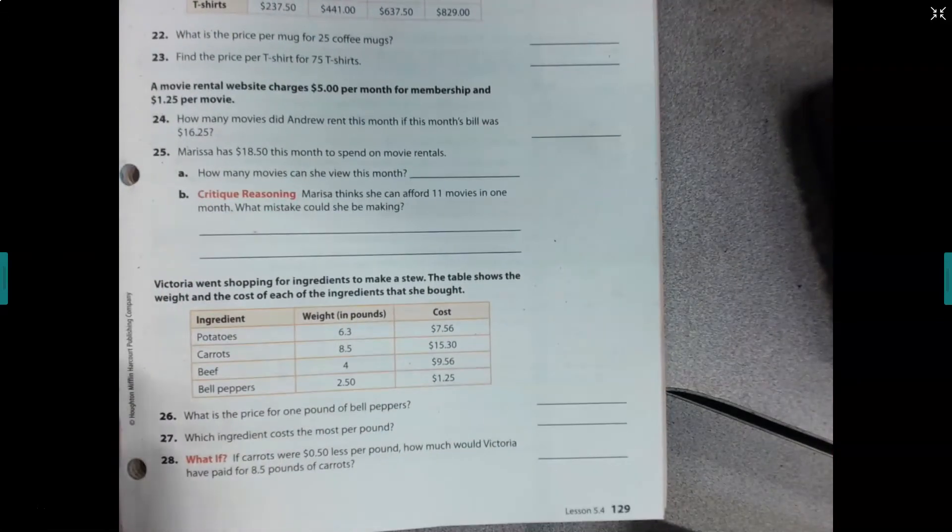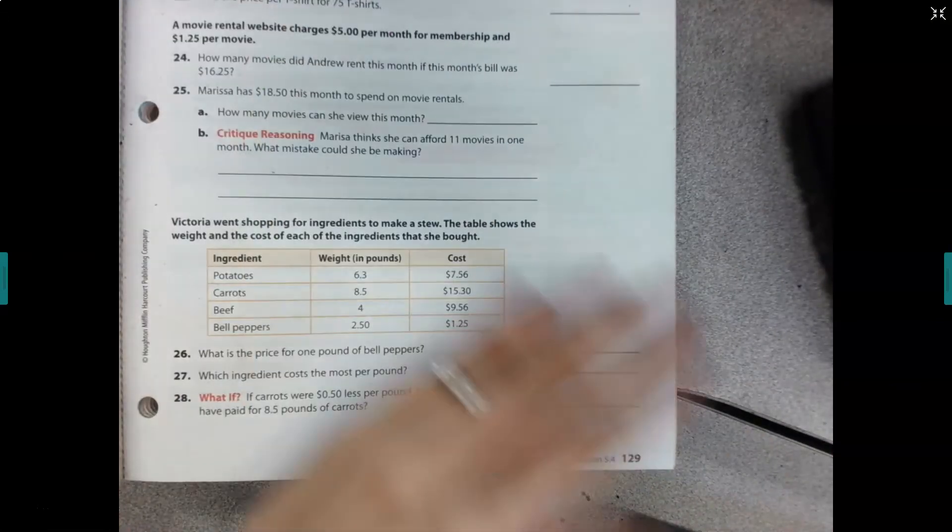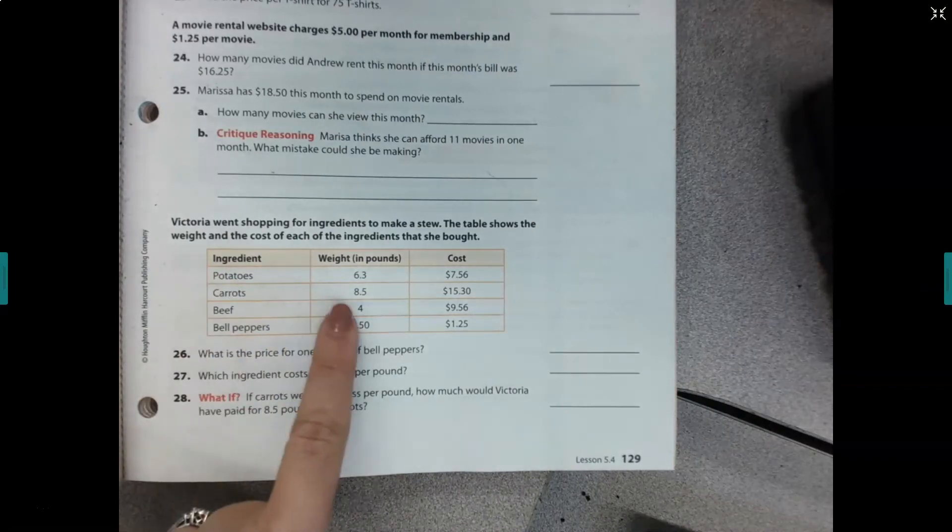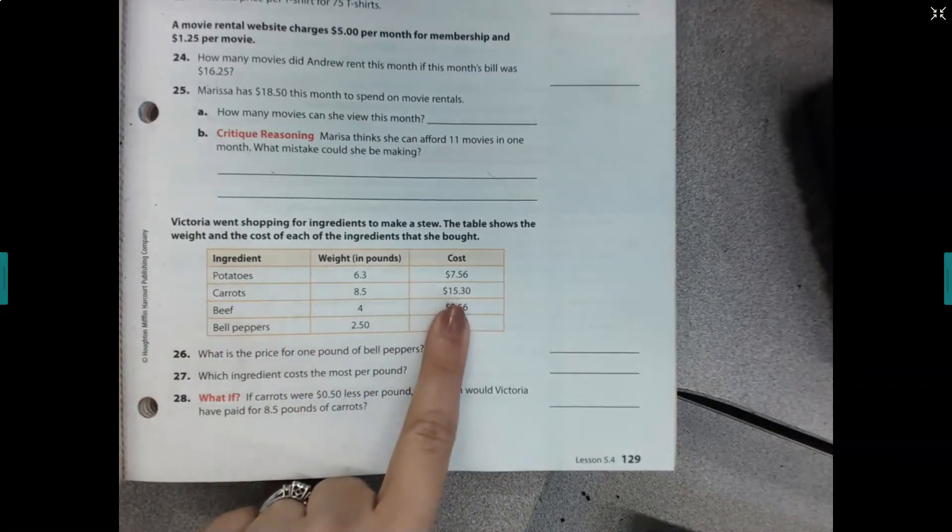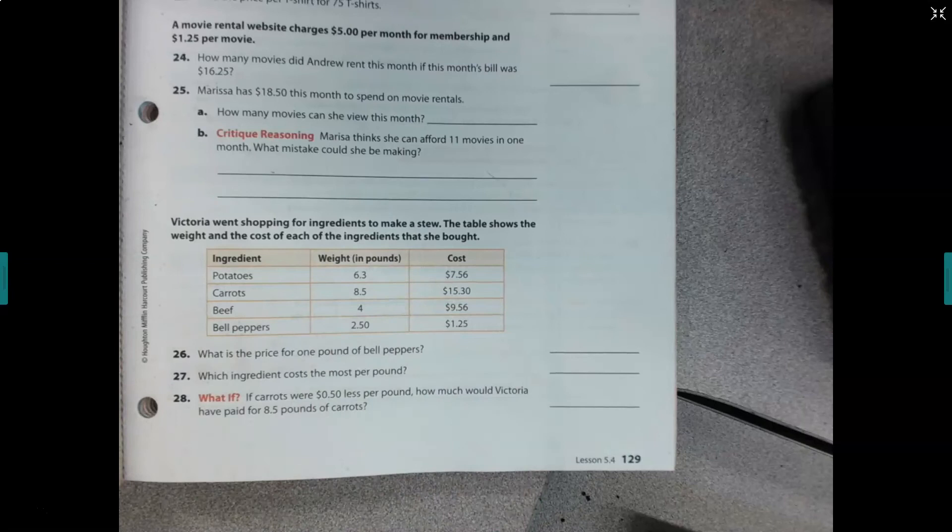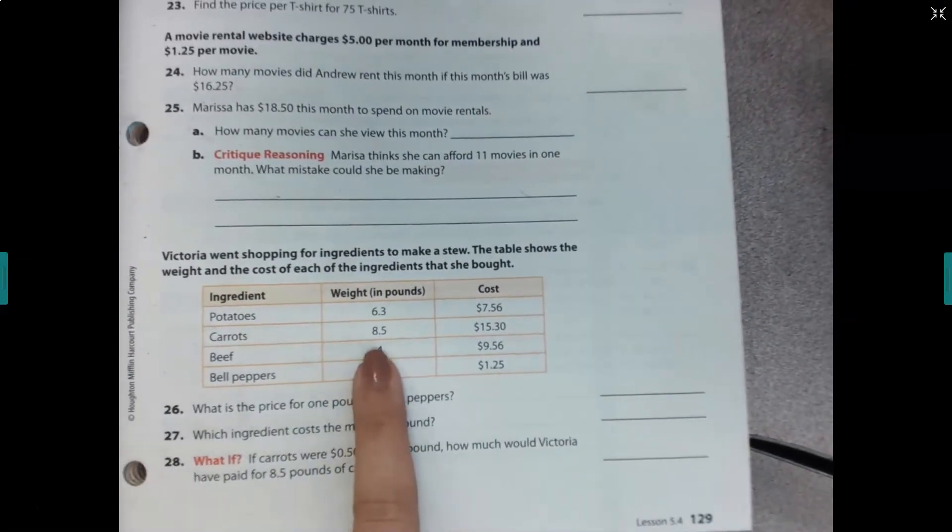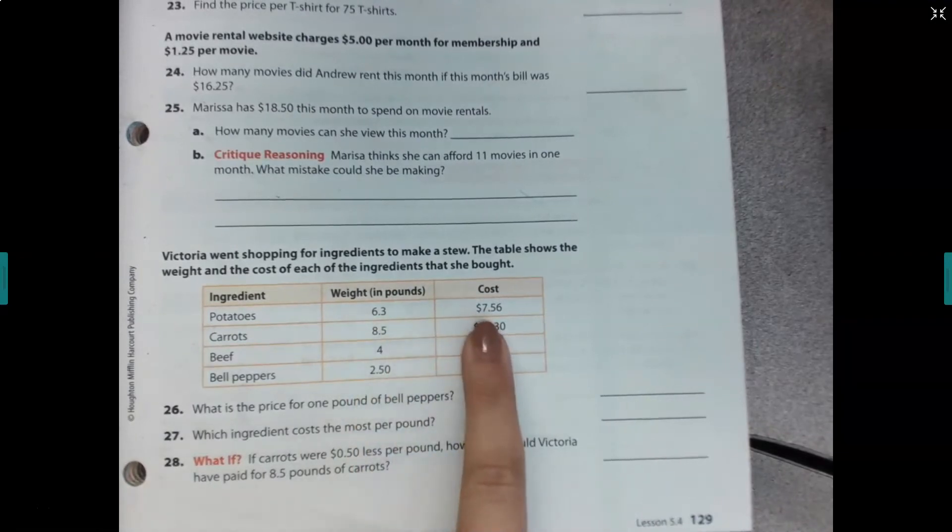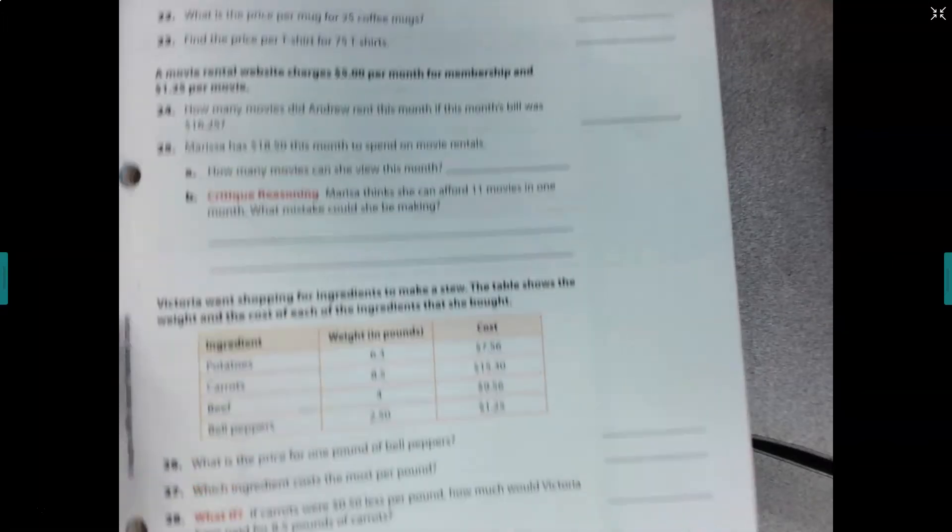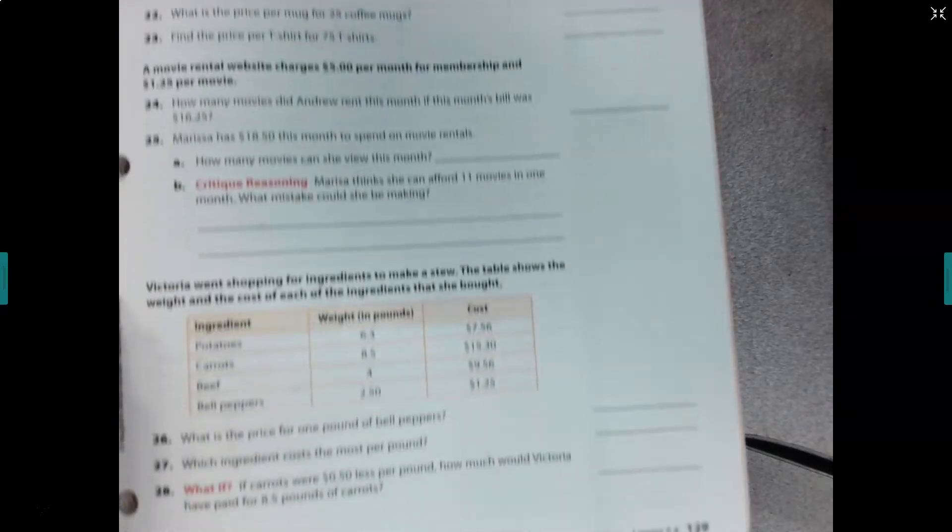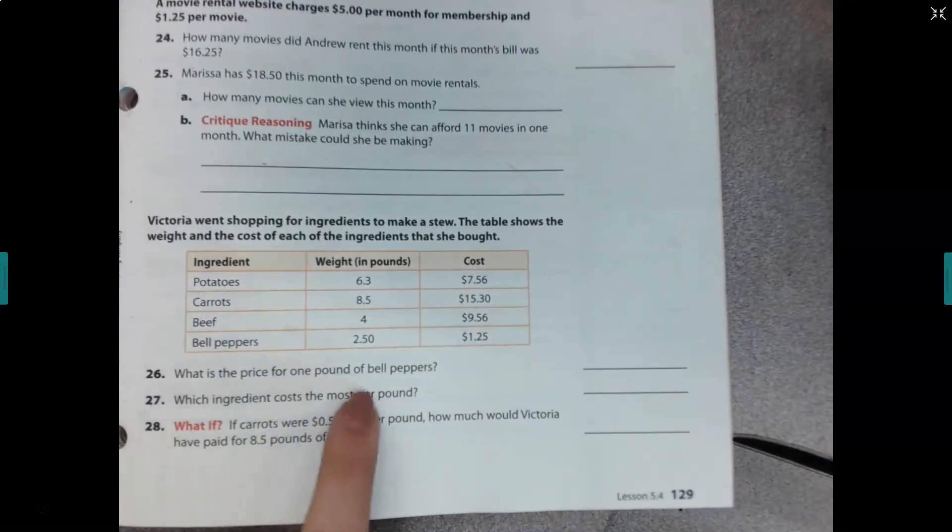Let's talk about this last one. It says, Victoria went shopping for ingredients to make a stew. The table shows the weight and cost of each of the ingredients that she bought. So the important thing to keep in mind here, this is the total weight. So she bought 6.3 pounds of potatoes, and that costs $7.56. So this is the total cost of the potatoes.